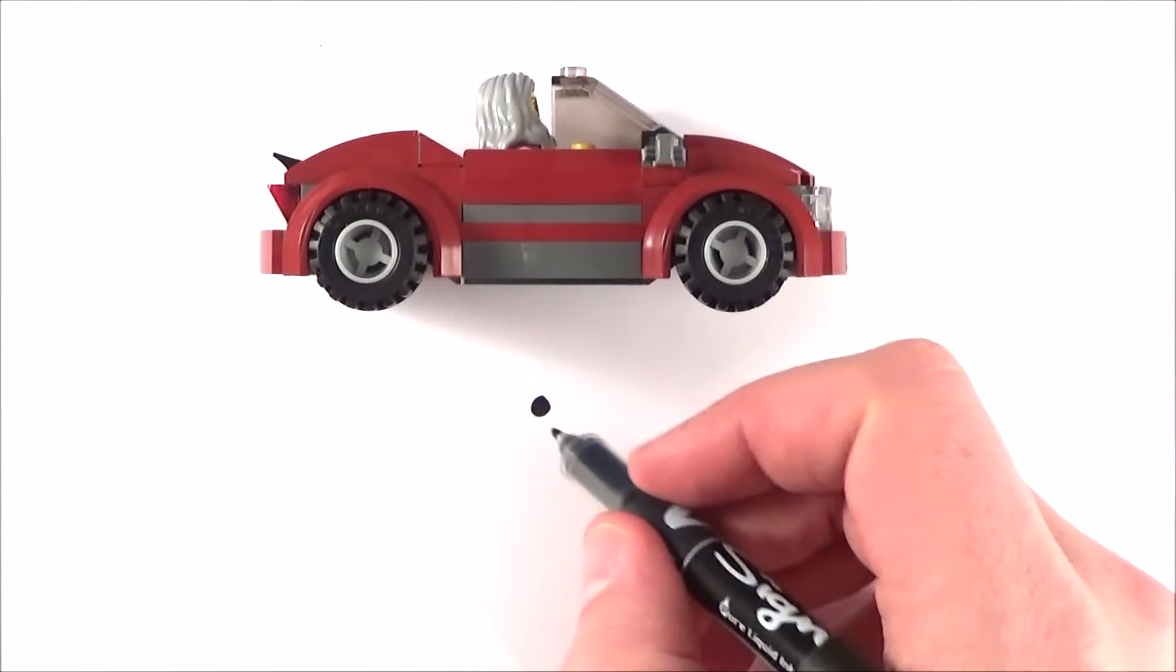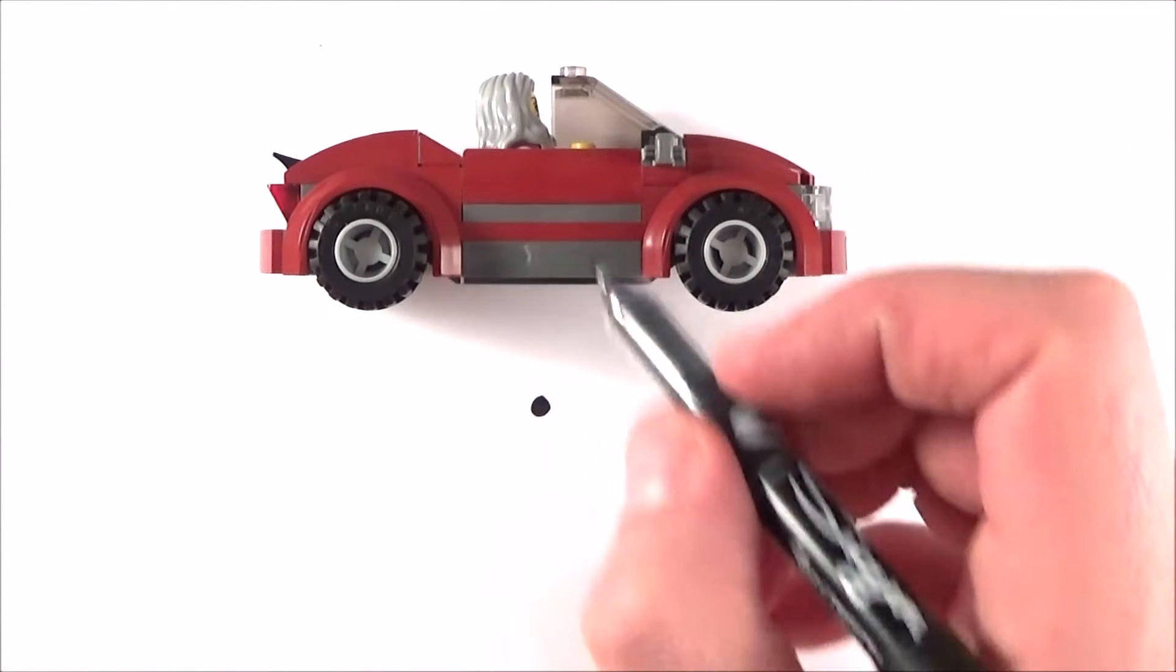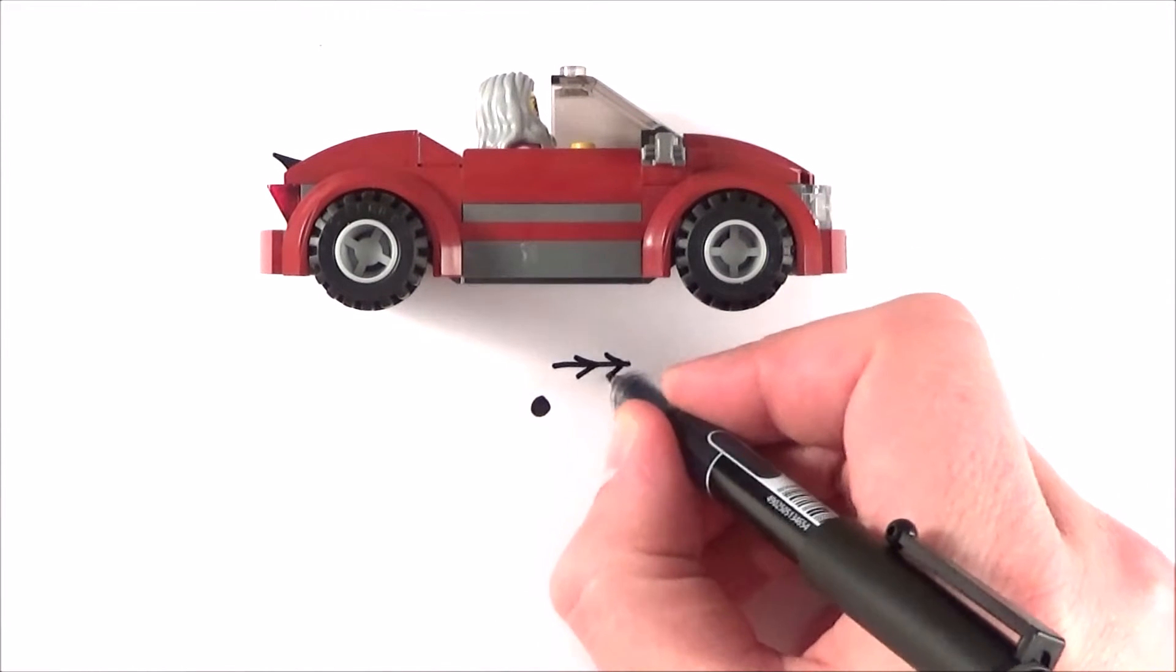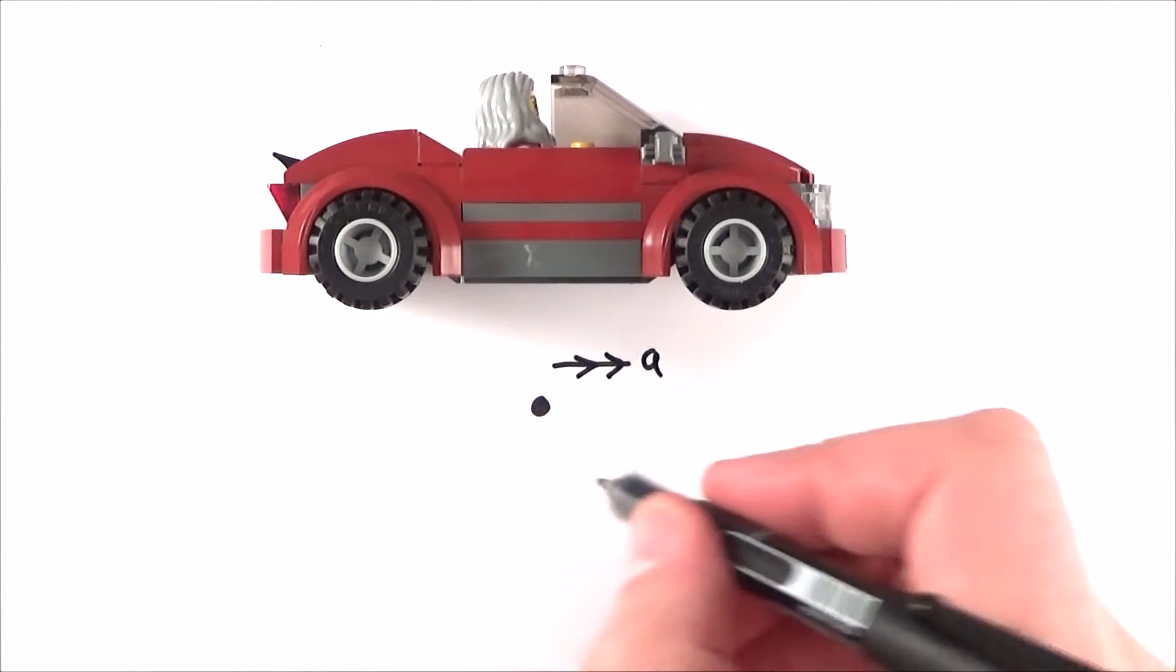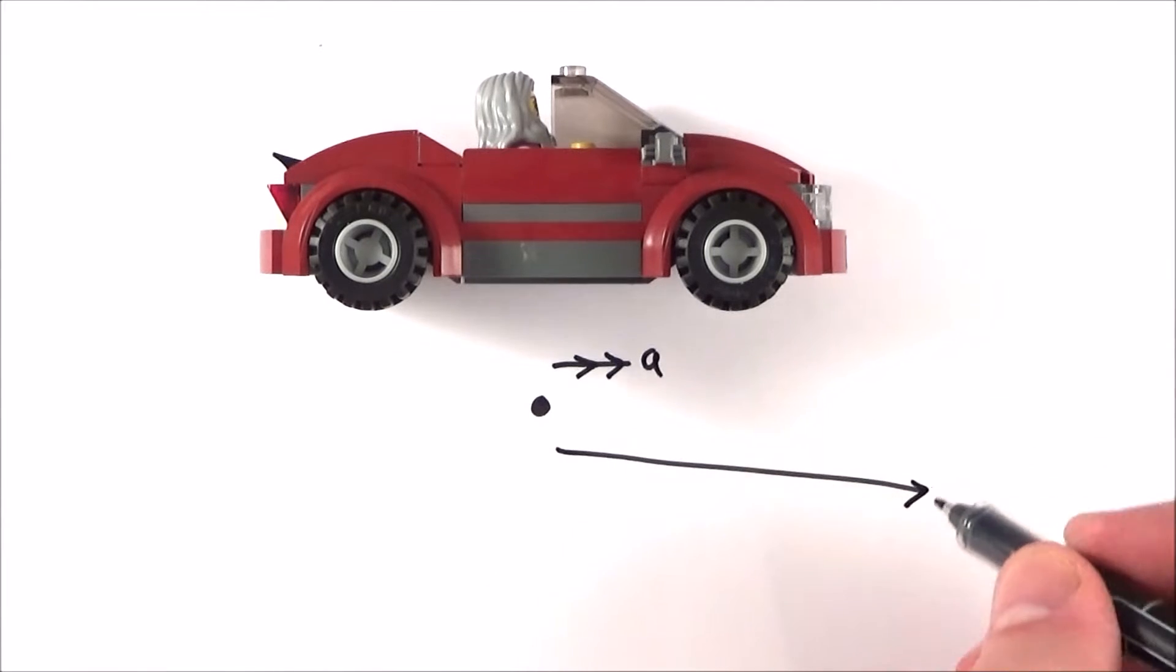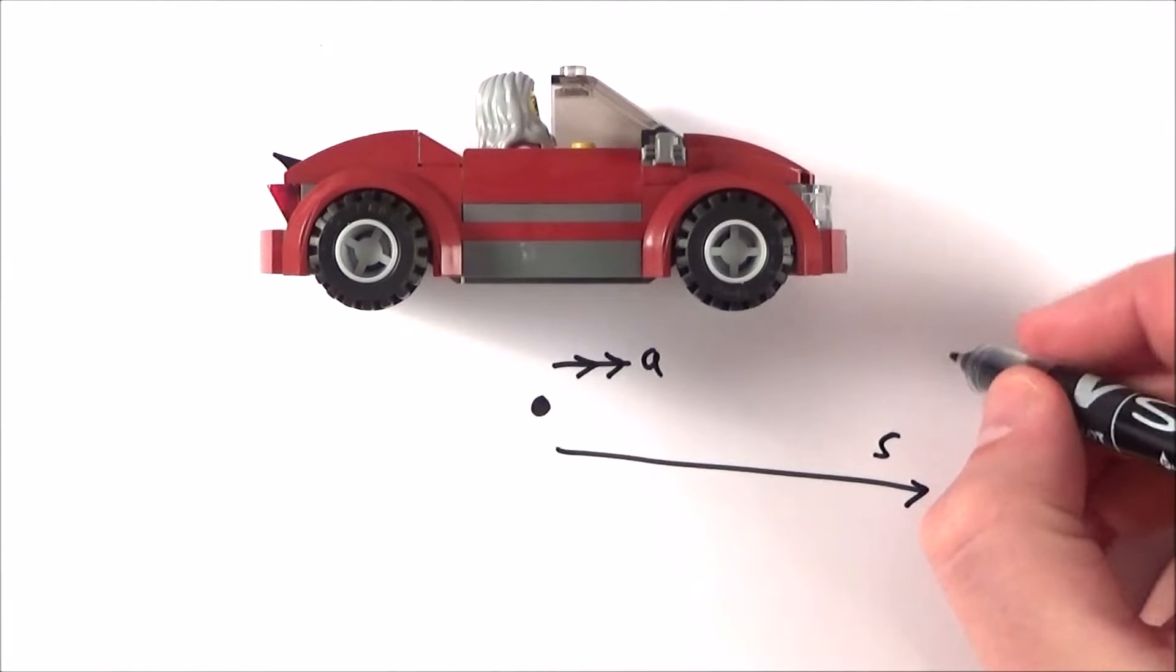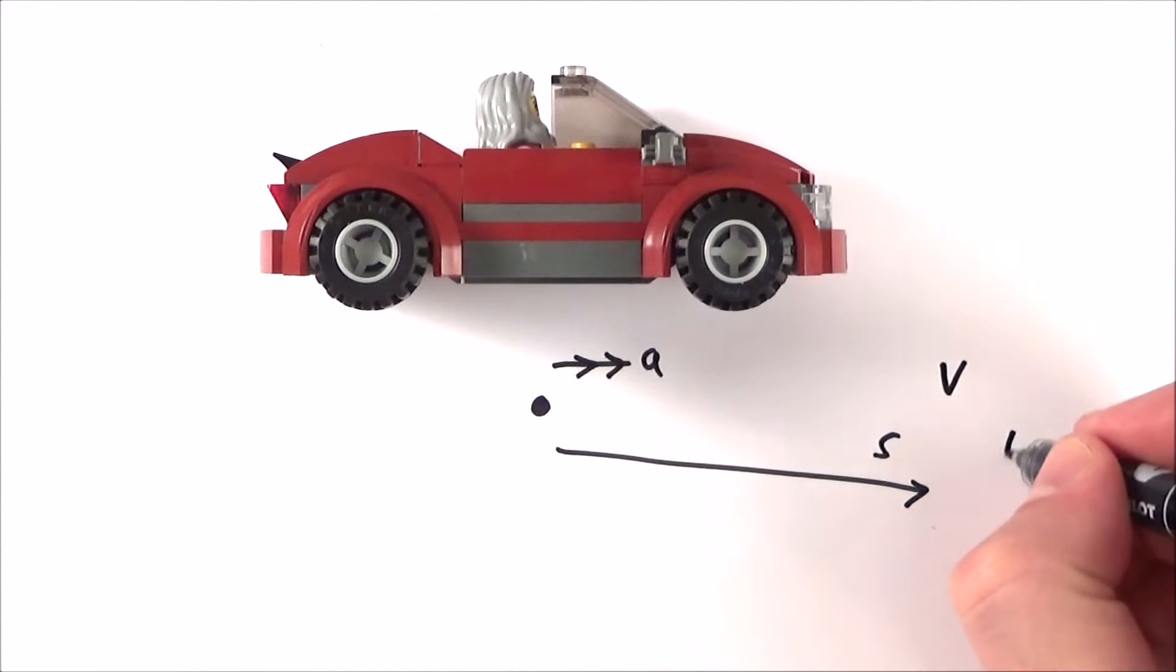We can represent this vehicle by this dot, which undergoes acceleration, getting quicker and quicker. It might travel a certain distance that we call s (the displacement), and ends up traveling at some final velocity v after a time t.